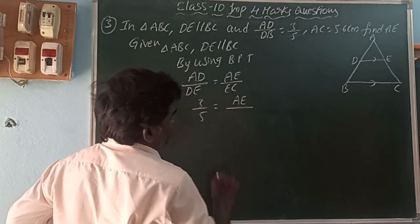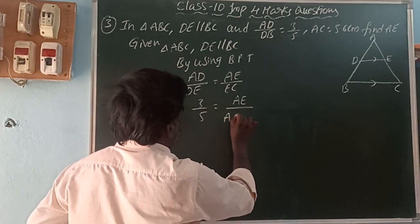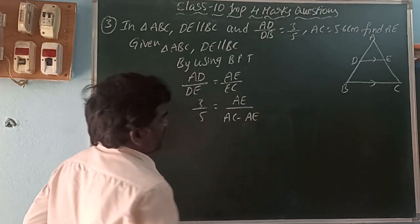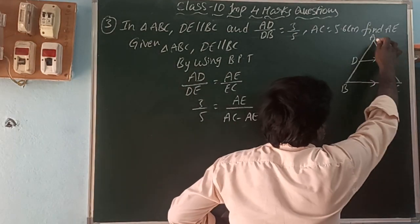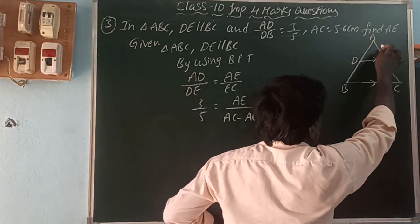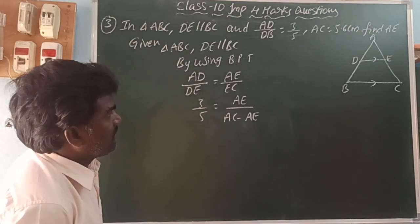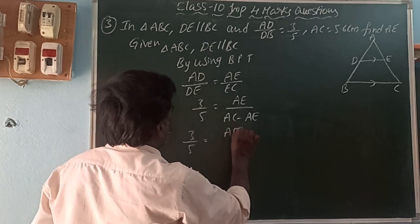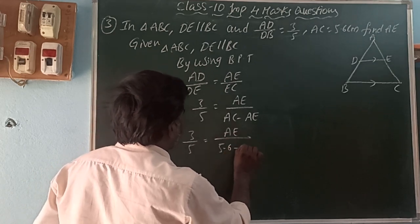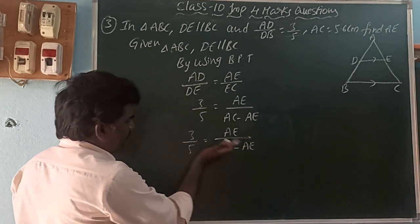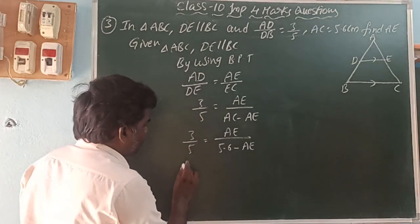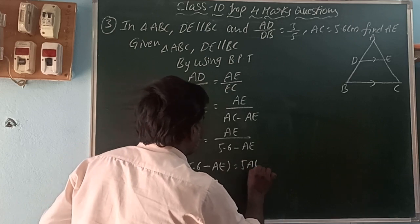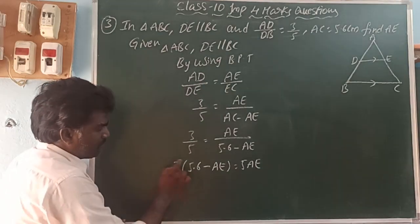AE by EC — we can write EC as AC minus AE. We are given that AC equals 5.6. So the equation becomes 3 by 5 equals AE divided by (5.6 minus AE). Cross-multiplying: 3 multiplied by 5.6 gives 16.8.